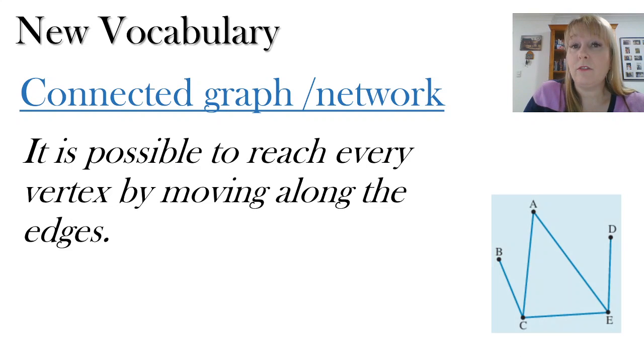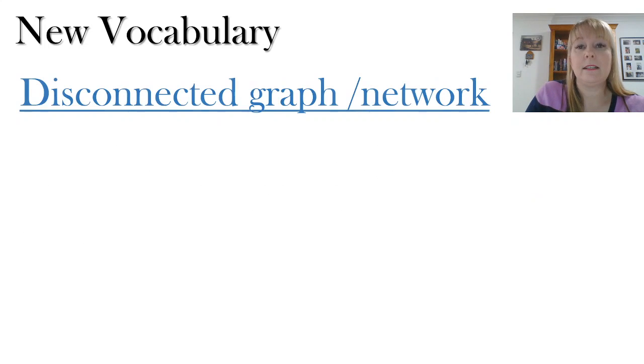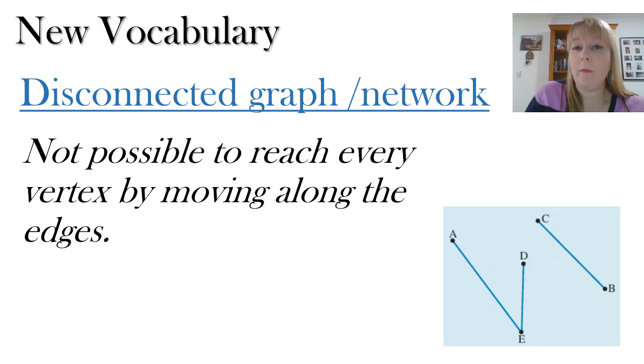In a connected graph or network, it is possible to reach every vertex by moving along the edges. But in a disconnected graph or network, it's not possible to reach every other vertex by moving along the edges. And this is an example because there is no way that you can join from point D to point C. They are completely separated. So they're called a disconnected network.